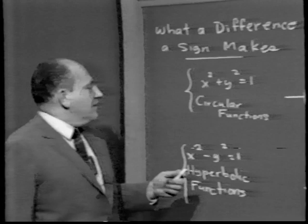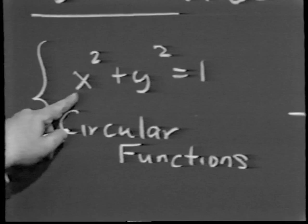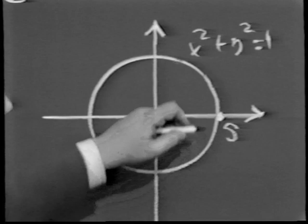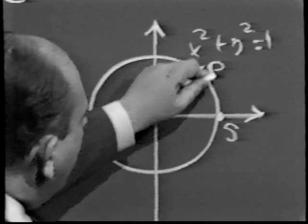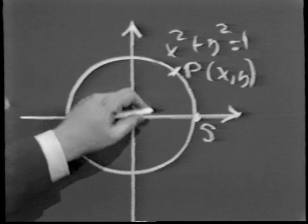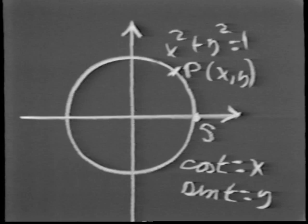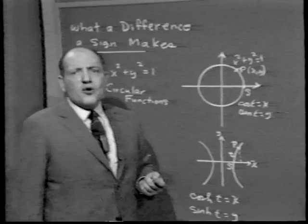By way of brief review, recall that the circular functions originated as follows. We consider the circle whose equation is x squared plus y squared equals 1. Picking a starting point and taking any length t, we wrap t around the circle. When the length t terminated at point P, we defined cosine t to equal x and sine t to equal y. That was the geometric interpretation of the circular functions, after which we showed there was a physical meaning as well.